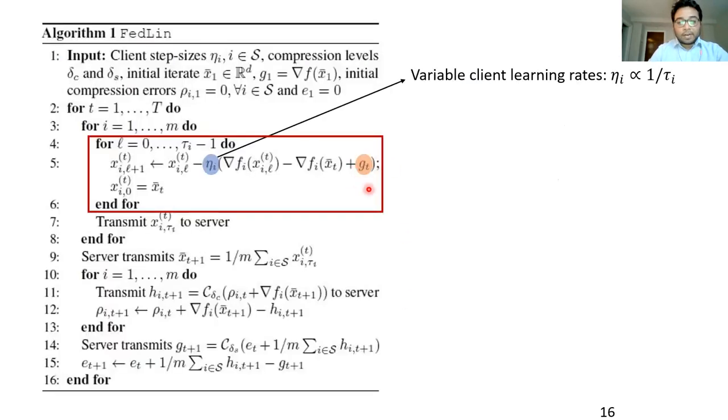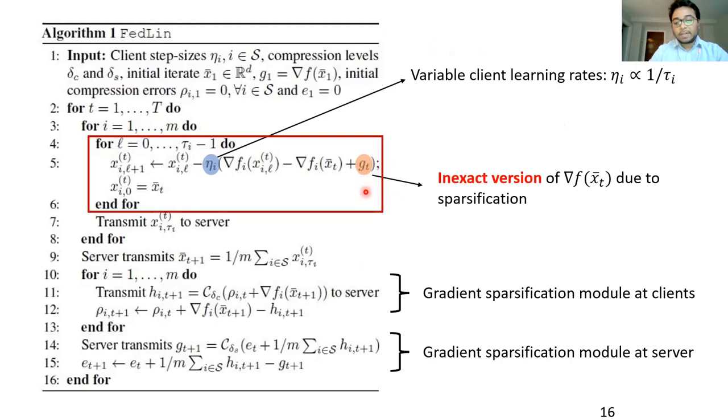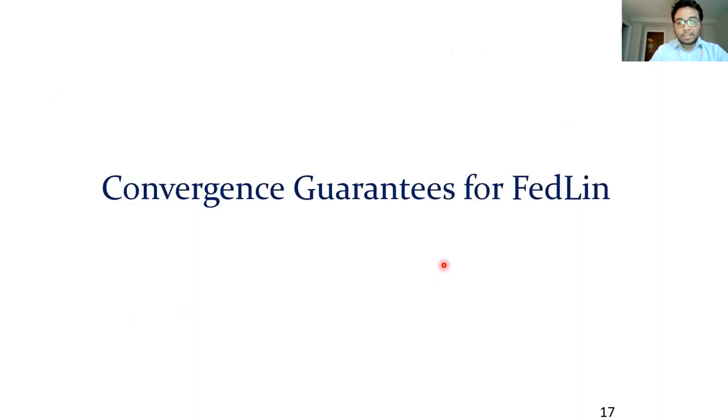The final component of our algorithm is that instead of the true gradient sitting here, we have an inexact version of it due to sparsification, either at the clients or at the server. And this makes the analysis significantly complicated.